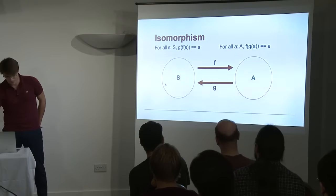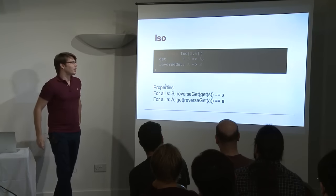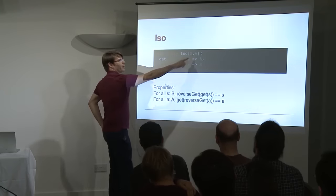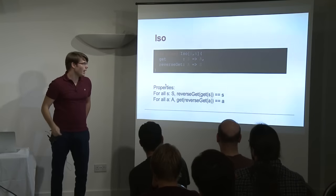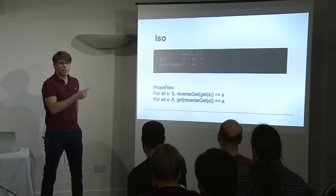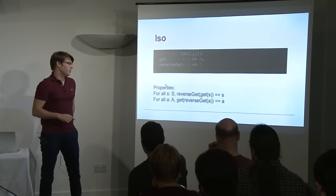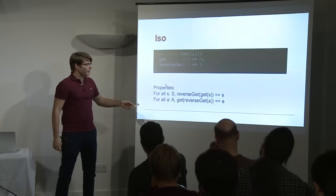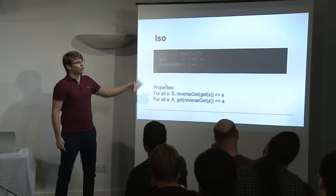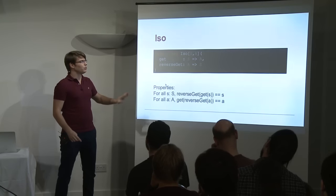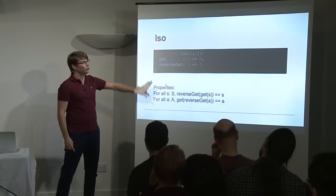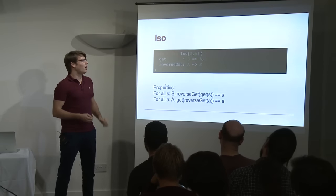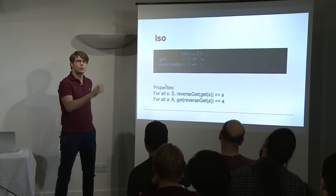So how could we implement this in Scala? Typically we could have a case class, namely ISO, with two type parameters S and A, and two functions: get and reverse get, which are exactly the F and G we had before. On top of this, we need the two properties. At the moment we cannot encode them in Scala, so let's assume that when we create an ISO these two properties exist, and we'll talk about later whether we can link these properties to our case class.